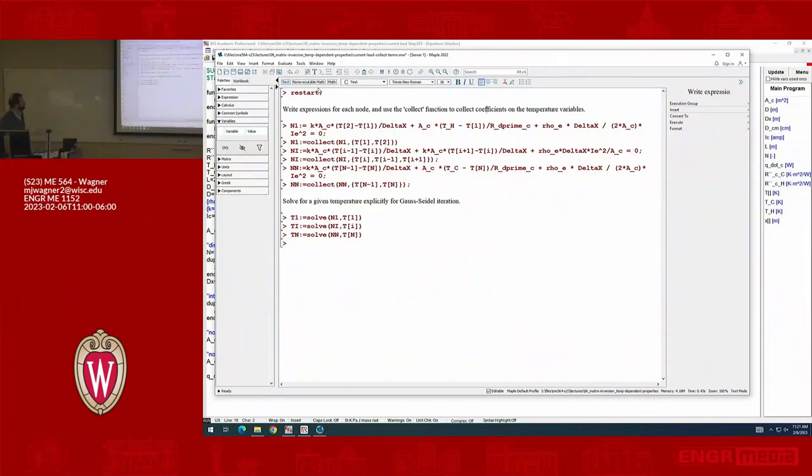All right, so there's a lot going on here. But what I have is, first I've written out the expressions for each node. That is, like the first equation that I wrote, I'm going to go through and just symbolically write it out. So it's exactly the same thing: k, a, c, t2 minus t1 over delta_x. This is the node 1. These are our expressions. So we'll enter that in.